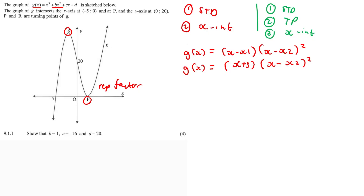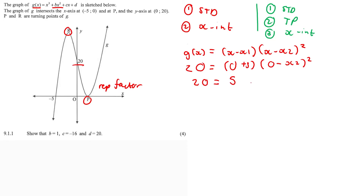Now we need to solve for x₂ by substituting a known point. We use the y-intercept, subbing in x = 0 and y = 20. So: 20 equals (0 + 5) times (0 − x₂) squared. Simplifying, 0 plus 5 is just 5, giving us 20 equals 5 times x₂ squared.